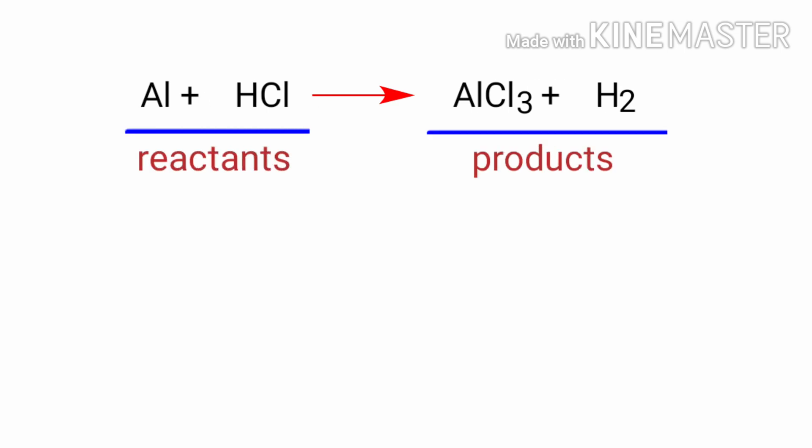In this equation, the reactants are Aluminium and Hydrogen Chloride and the products are Aluminium Chloride and Hydrogen. If you look at this equation, the equation is not balanced.